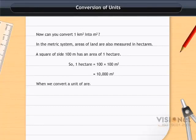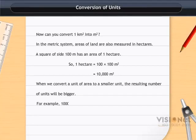When we convert a unit of area to a smaller unit, the resulting number of units will be bigger. For example, 1,000 cm² = 1,000 × 100 mm² = 100,000 mm².